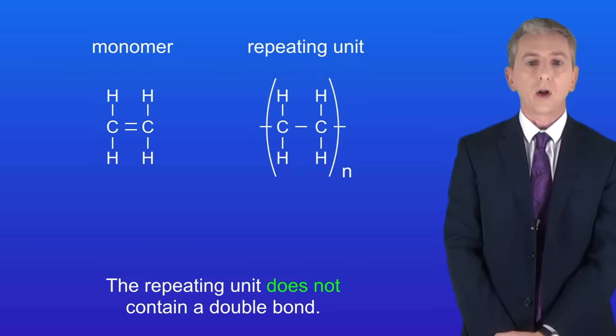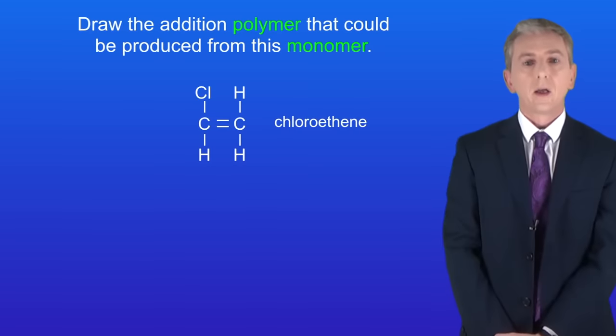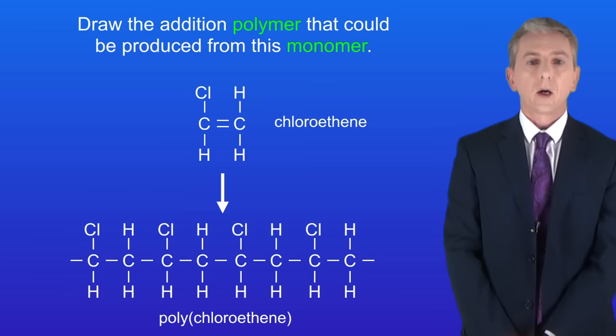Now in the exam you could be asked to draw a polymer given an alkene monomer. Here's a question for you to try. Draw the addition polymer that could be produced from this monomer. So pause the video and try this yourself. Okay, the monomer is chloroethene, so the polymer is polychloroethene and I'm showing that here.